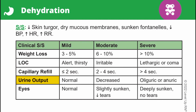In terms of urine output, it will be relatively normal with mild dehydration, decreased with moderate dehydration, and very little or none at all with severe dehydration. In terms of eye appearance, eyes will look normal with mild dehydration; slightly sunken with decreased tear production in moderate dehydration; and deeply sunken with no tears produced when crying in severe dehydration.